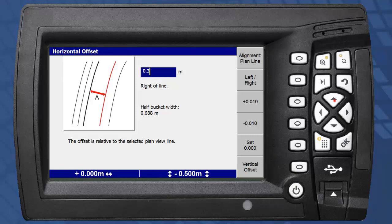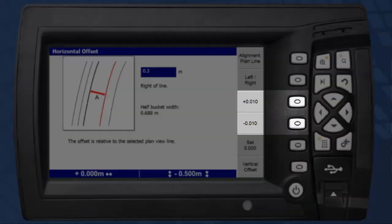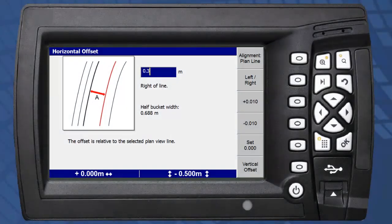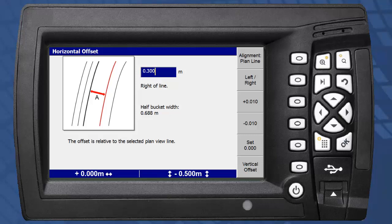Defining the horizontal offset is done the same as the vertical offset. Soft keys provide incremental offsets, a reset to 0 option, and a toggle between left and right. Alternatively, the arrow keys can be used to define a specific offset.